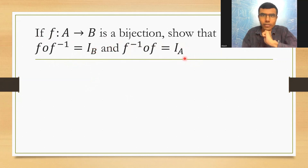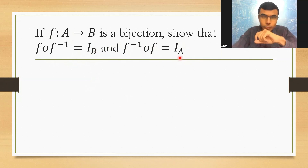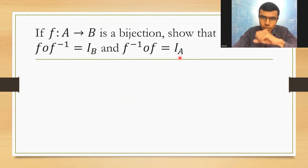What are I_B and I_A? I_B and I_A are identity functions. I_B maps from B to B, and I_A maps from A to A.